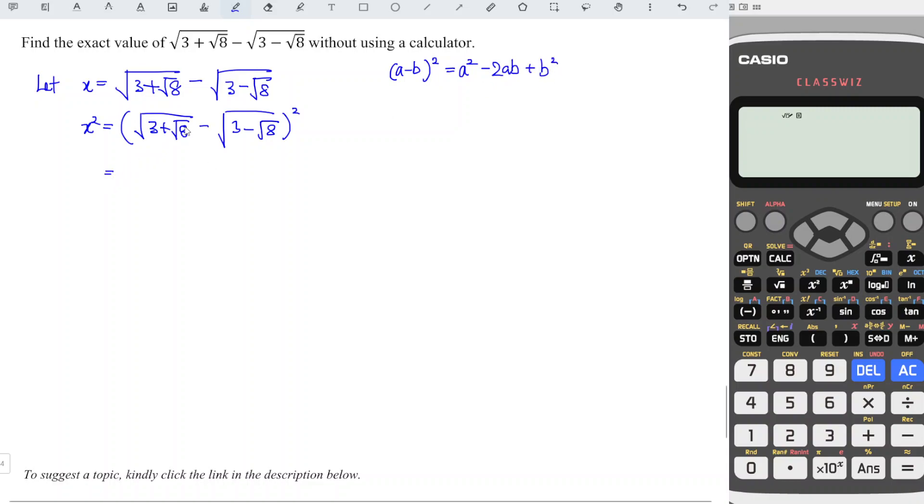This means that the square root and square cancel each other, so we're left with only 3+√8, then minus 2 times ab. So a is √(3+√8), and b is √(3-√8).